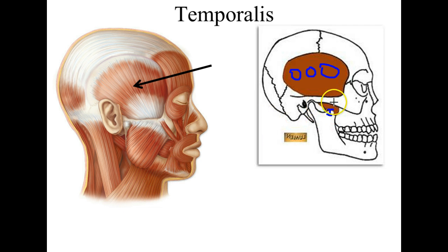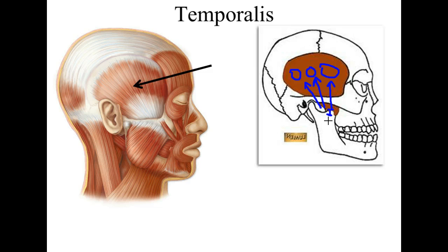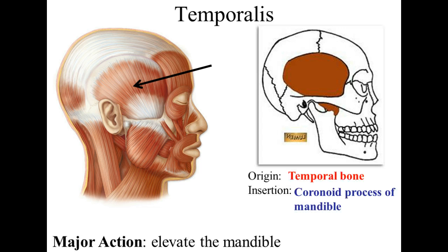The insertion gets moved up towards the origin. What kind of movement does that indicate for the mandible? When you open the mandible it's kind of like a hinge action — this coronoid process gets pulled downward away when you open your mouth, and then to close the mouth the temporalis is going to forcefully pull that back upwards. We call that elevation — to elevate the mandible — which is essential in the act of chewing so we can break down our food.